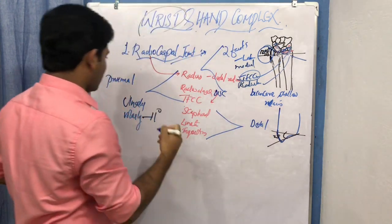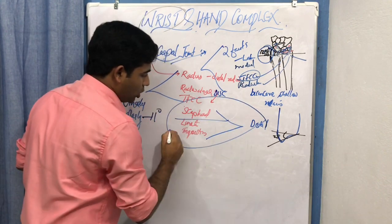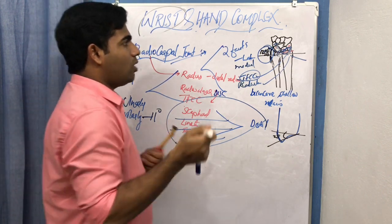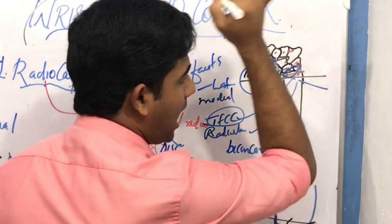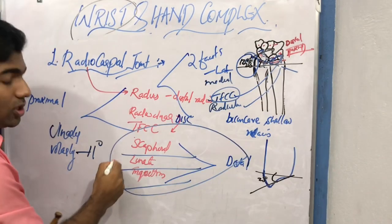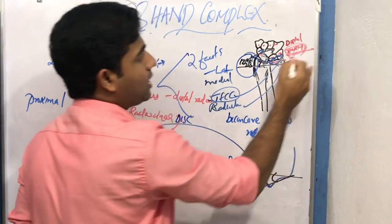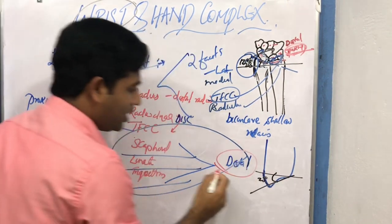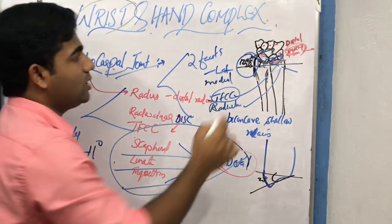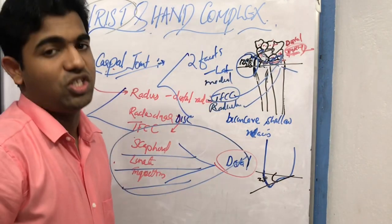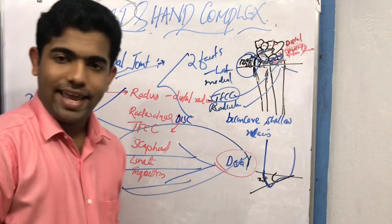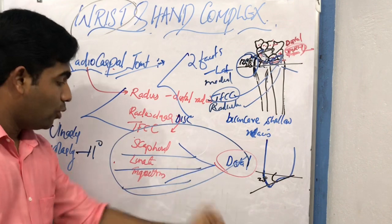The distal row of the radiocarpal joint is made up of the scaphoid, lunate, and triquetrum. Don't get confused — the distal row of the radiocarpal joint is made by the proximal row of the carpal bones. The proximal carpal bones (scaphoid, lunate, triquetrum) are closer to the body, while trapezium, trapezoid, capitate, and hamate are the distal row — further away from the body. The pisiform bone, even though anatomically present, does not form any significant role in the wrist complex.